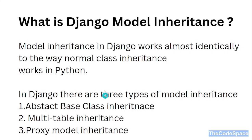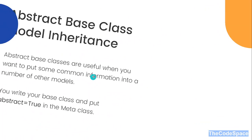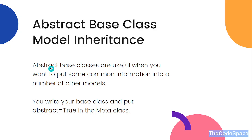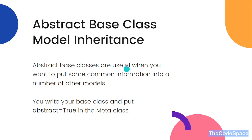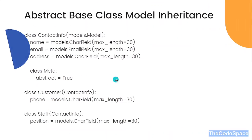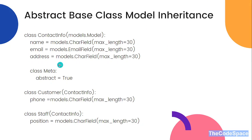Let's check what is abstract base class inheritance. As the name suggests, we will have an abstract base class. In our base class, we will assign one property — abstract is equal to true — in a Meta class. That class will not get created as a database table, but whatever model is inheriting that base class can access its properties. We are just doing abstraction.